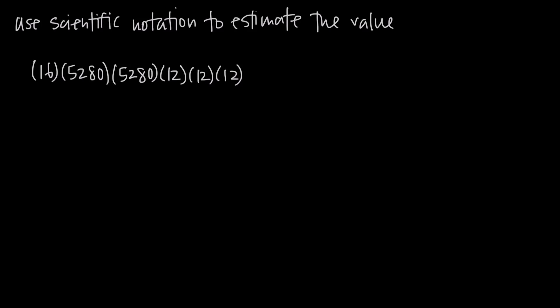In this video, we're using scientific notation to estimate a big product here. We have 16 times 5,280 times 5,280 times 12 times 12 times 12, and we want to use scientific notation to get a quick estimate of what this might be.